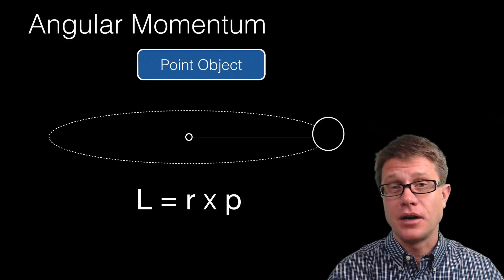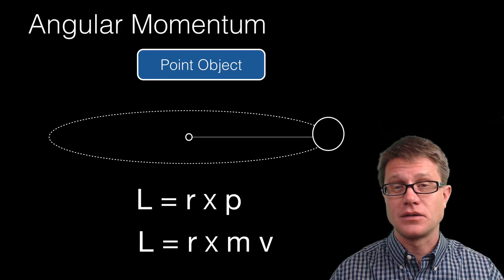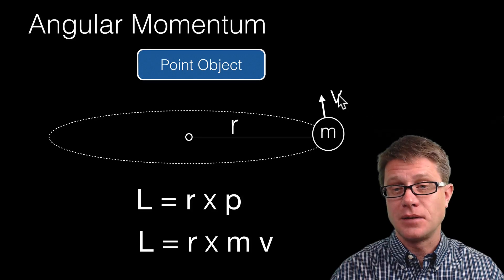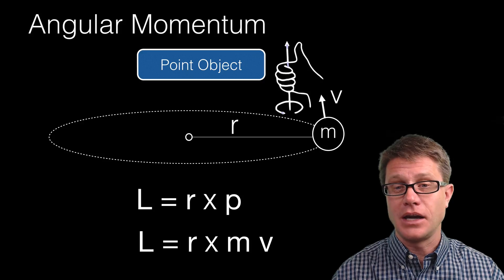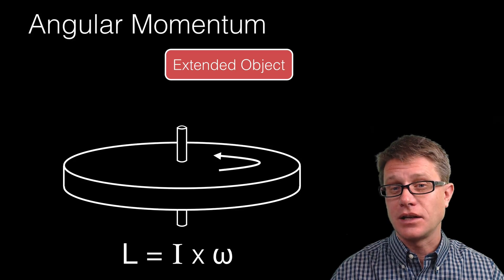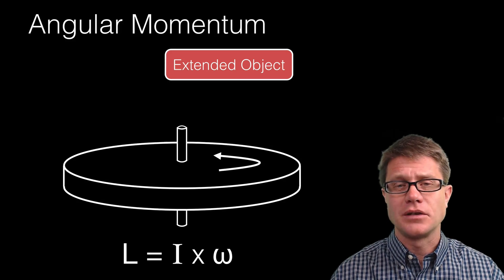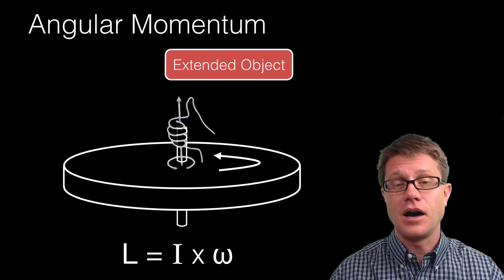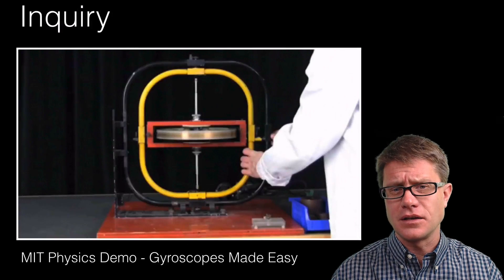To calculate the angular momentum of a point object, you take an object revolving around a center and multiply the radius times the momentum of that object. The momentum of the object is the mass times the linear velocity, and we simply multiply it times the radius — the distance from the middle. For an extended object, all we do is multiply the rotational inertia times the angular velocity — in other words, how fast it is spinning. As I move my fingers around using the right-hand rule, the angular momentum is going to be acted in the upward direction on that extended spinning object.